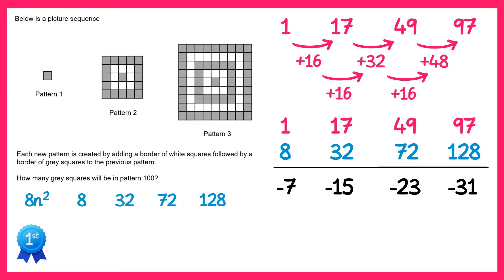The numbers in black here form a linear sequence. You can find the nth term of that quite easily. It goes down by 8 each time so it's minus 8n, but we need to start at negative 7 so it's negative 8n plus 1.